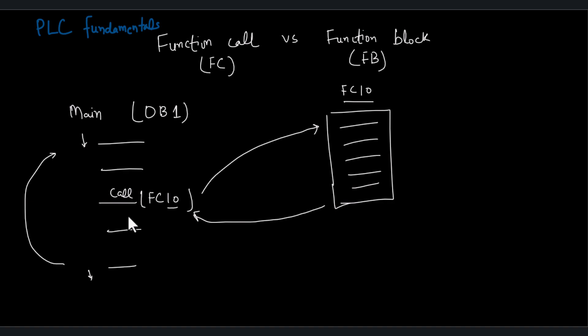Suppose we have a function block at the next instruction. We call the FB and it has been randomly assigned the number FB15. This FB15, just like the FC, has a set of instructions.